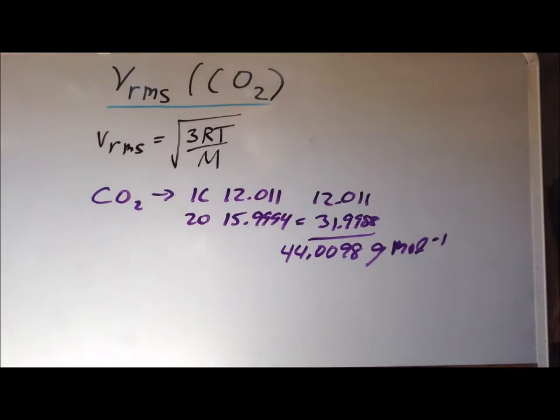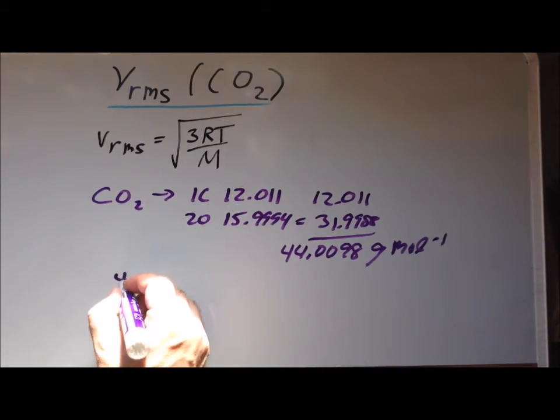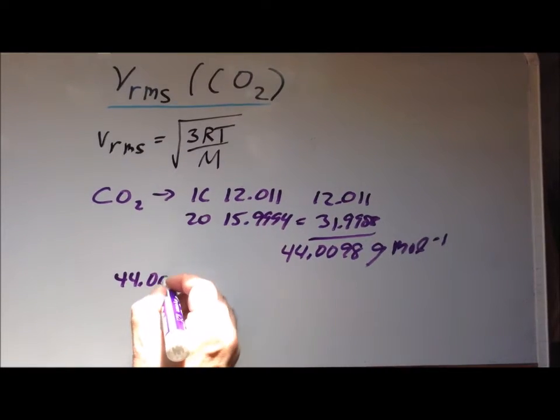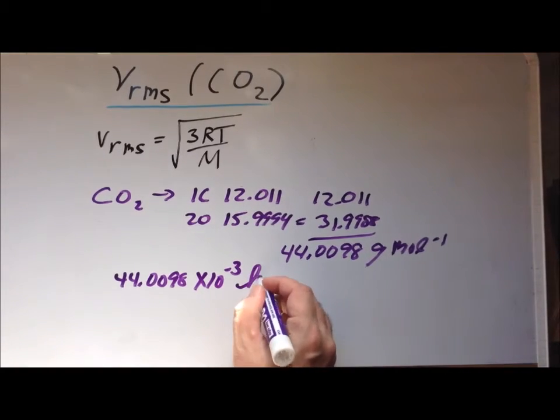For later purposes, we are going to want to think of the molar mass in terms of kilograms per mole. So knowing that there are 10 to the minus 3 kilograms in one gram, this is equivalent to 44.0098 times 10 to the minus 3 kilograms per mole.